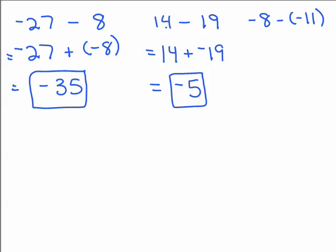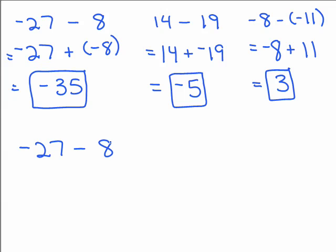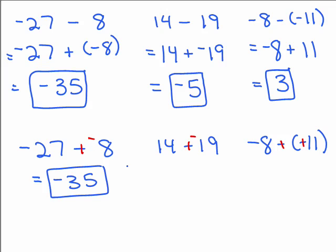You could also think of that as: you have 14 dollars in your account, you write a check for 19 dollars, you're in the hole 5 dollars. For the last practice problem: change subtraction to addition, and the opposite of negative 11 is positive 11, so that's negative 8 plus 11. You're adding a negative and a positive — there are more positives, so the answer is positive, and 11 minus 8 is 3. Using the two pencil stroke method gives the same answers: negative 35, negative 5, and positive 3.